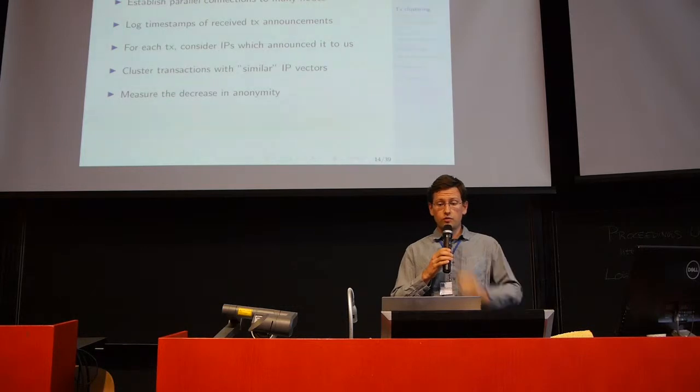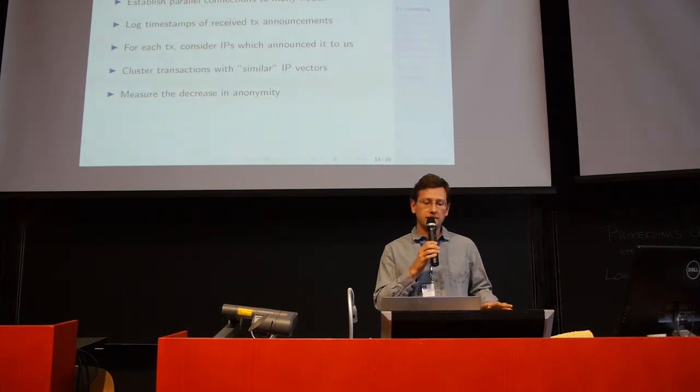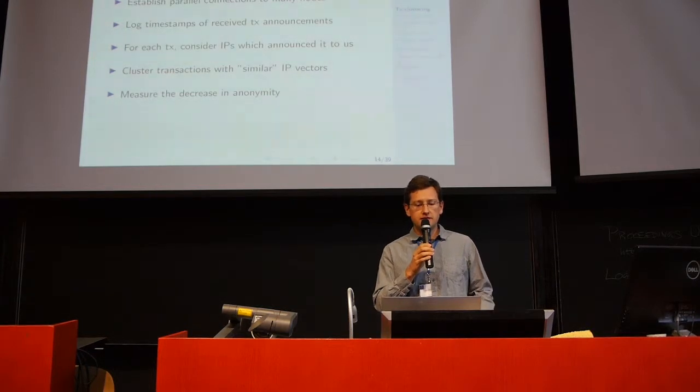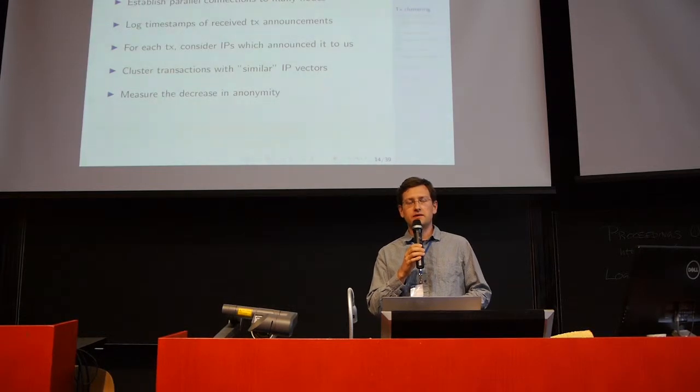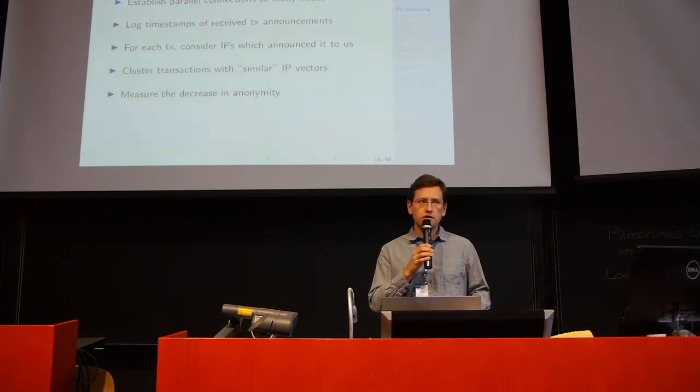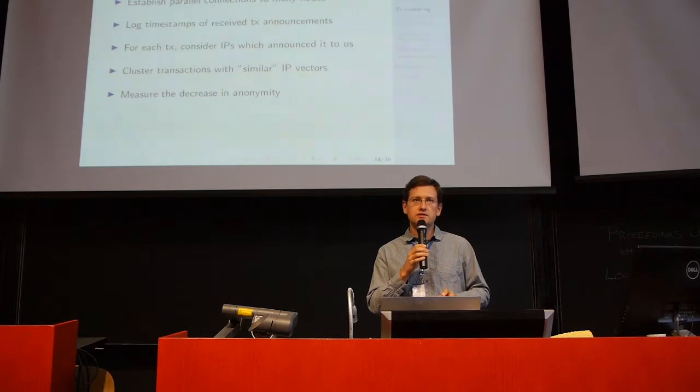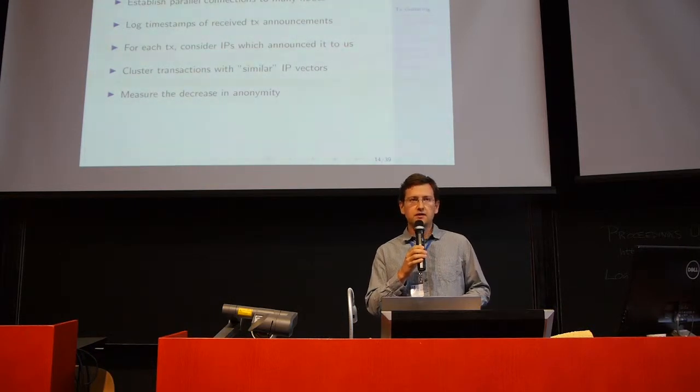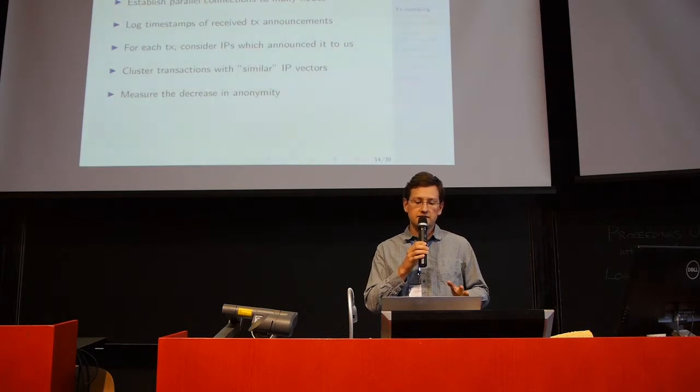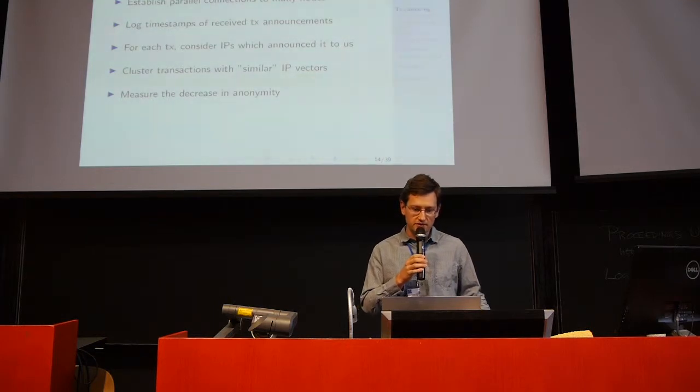First of all, we established many parallel connections to many nodes. We want to get as good view of the network as possible. And then, we will log the traffic, namely the timestamps of the transaction announcements in the inv messages. Then, for each transaction, we consider the first few IP addresses which announced it to us. In addition to previous related work, which considered one of the first IP-related transactions, we consider multiple IP addresses, and we assign weights to these IP addresses to better describe these real-world relationships. Then, we apply clustering method, and we cluster transactions which have similar or close IP vectors, and then we measure the decrease in anonymity which results from this function.